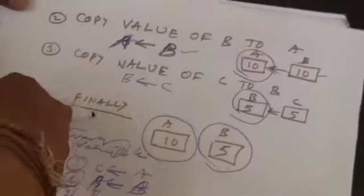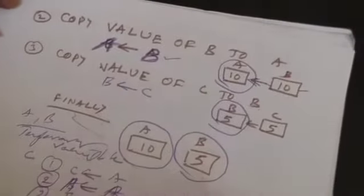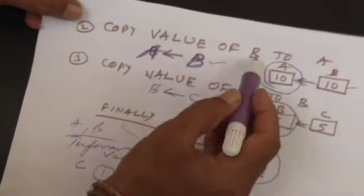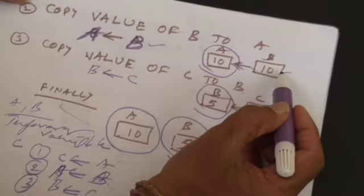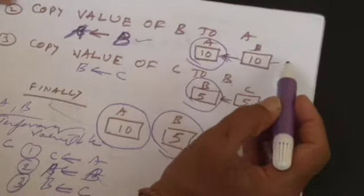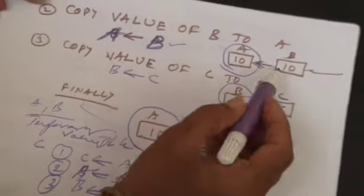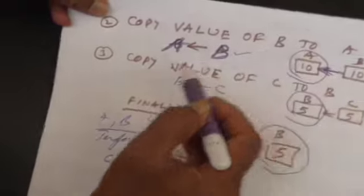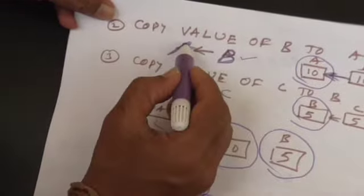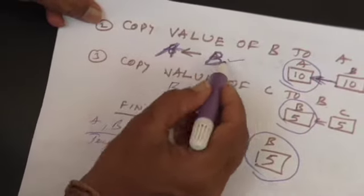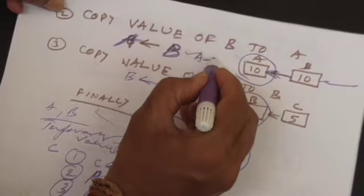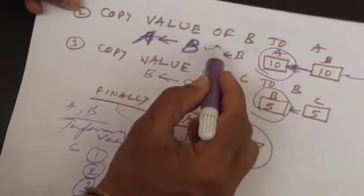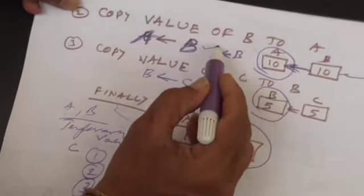The second step involves copying the value of B to A. B is containing the value 10 and we are just copying it: A is assigned B, meaning the value of B has been received into A.